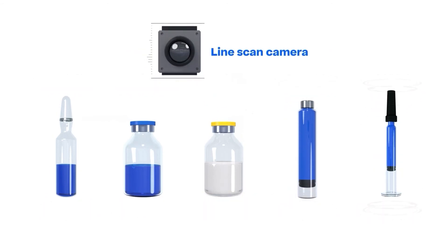Line scan cameras are particularly suitable for inspecting plunger, stopper or crimp defects or for detecting particles and suspensions.